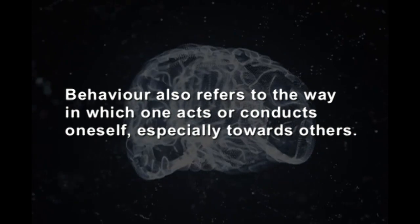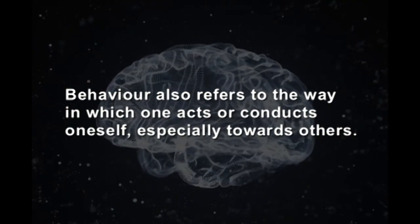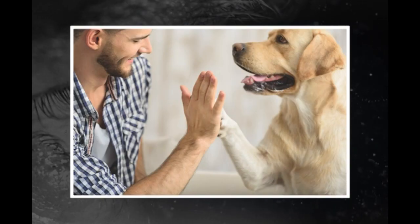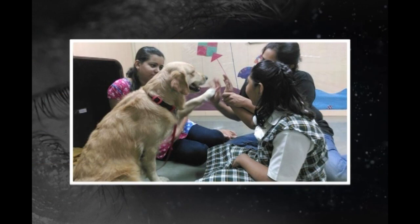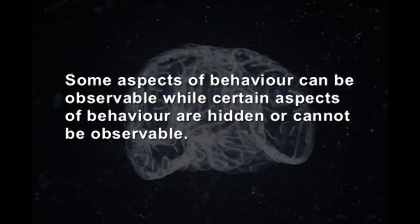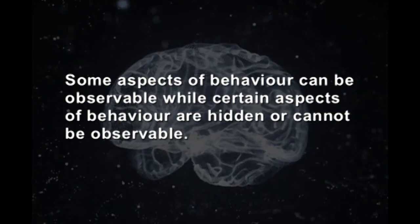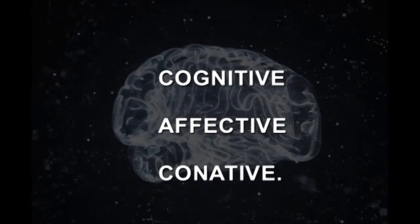Behavior can be defined as a response of the system or organism to various stimuli or inputs, whether internal or external, conscious or subconscious, overt or covert, and voluntary or involuntary. Behavior also refers to the way in which one acts or conducts oneself, especially towards others. It is the way in which an animal or person behaves in response to a particular situation or stimulus. Behavior can be overt or covert — some aspects of behavior can be observable while certain aspects are hidden or cannot be observed.